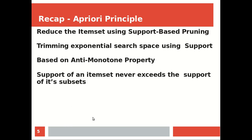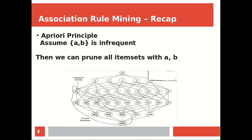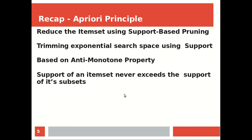Then we talked about how to reduce the itemset space using support-based pruning, because if you look at the same possible items, the space will be exponentially large. So we have the anti-monotone property, which says that the support of an itemset will never exceed the support of its subsets.